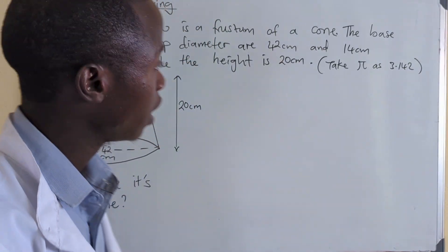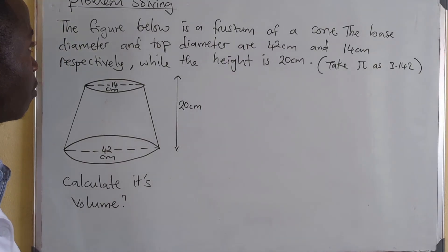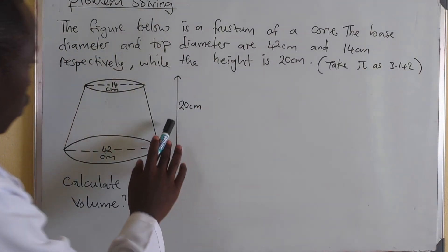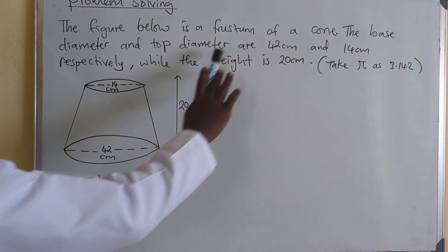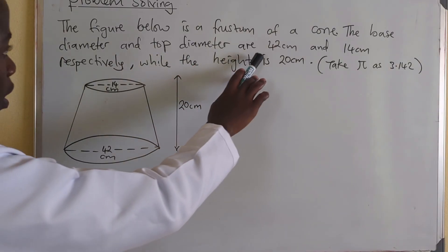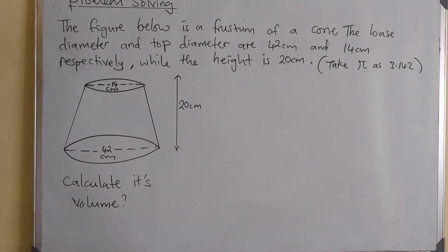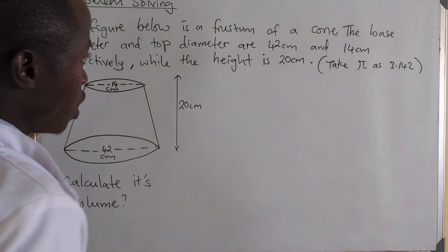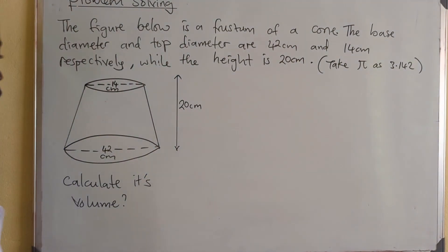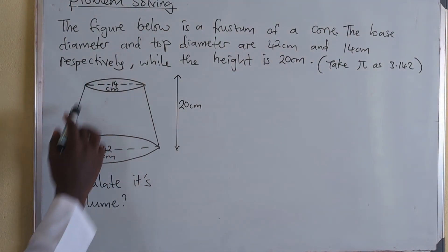Welcome to Leco Academy. In this video we are going to handle a question in mathematics. The figure below shows a frustum of a cone. The base diameter and top diameter are 42 cm and 14 cm respectively, while the height is 20 cm. Take pi as 3.142. The first term is a cone that has been cut.